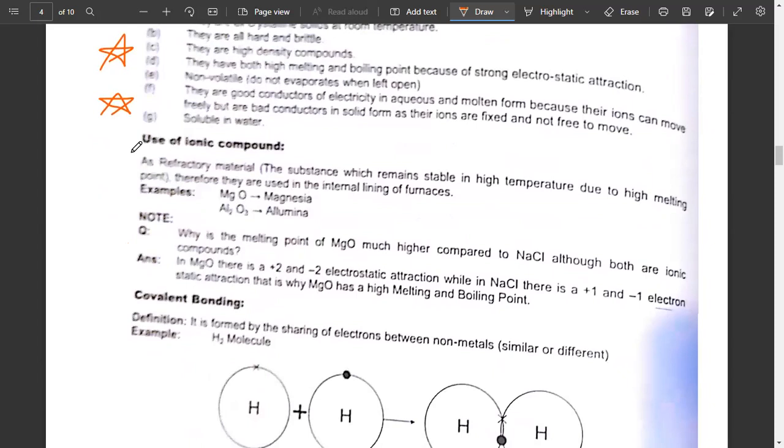They are used as refractory materials. Refractory materials are substances which remain stable at high temperatures due to high melting points. They are used in the internal lining of furnaces. Magnesia, MgO, and alumina, Al2O3, these are two examples of ionic compounds used as refractory materials.